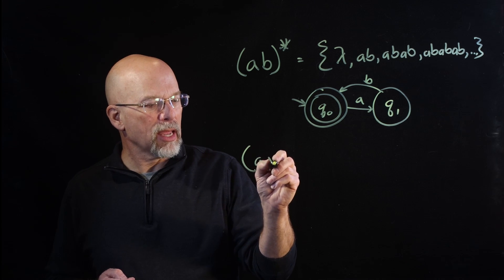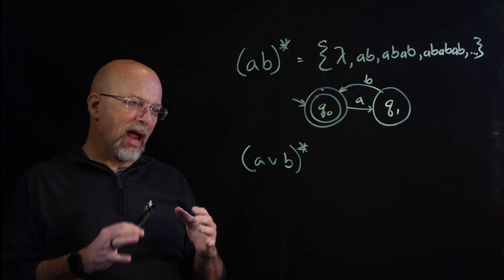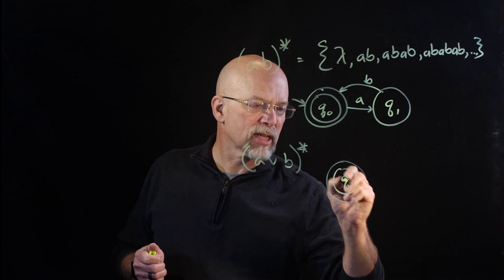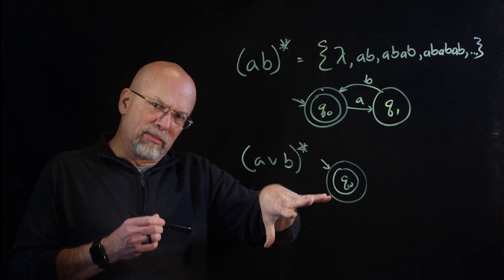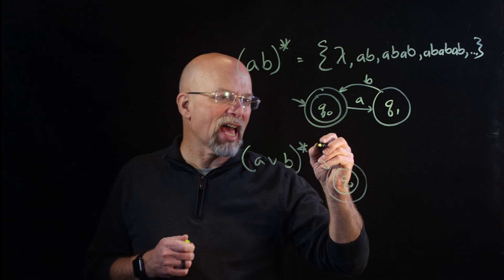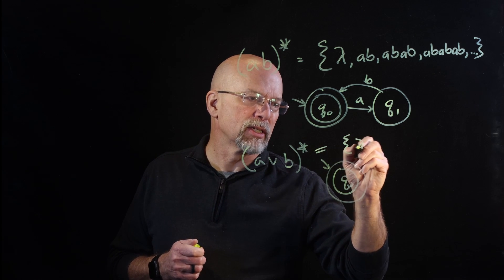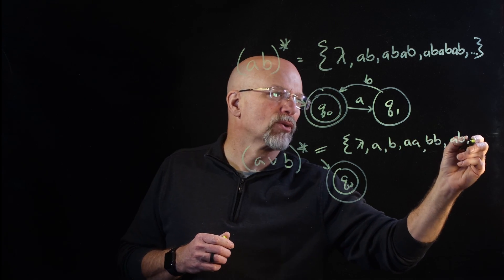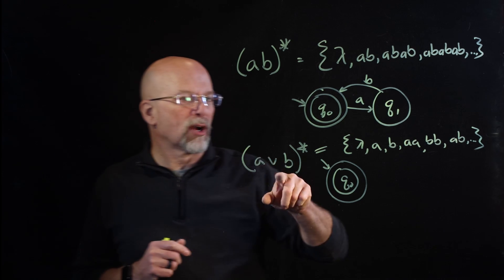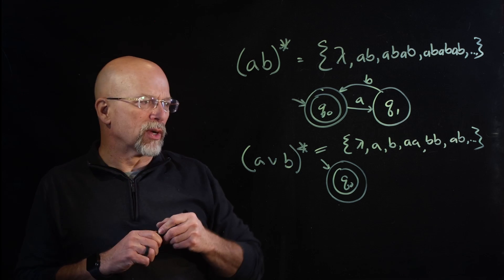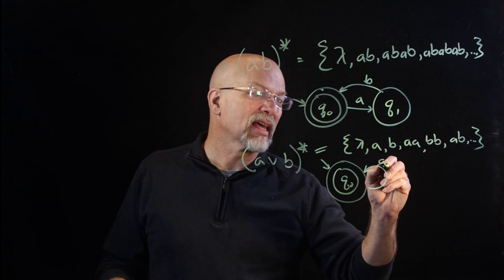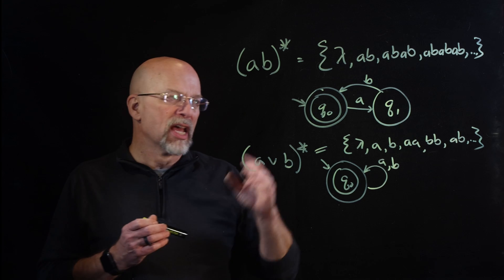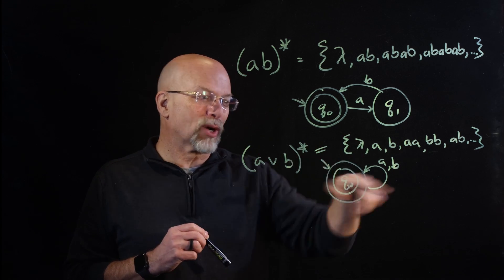What about (A or B)*? Since it's a star, the initial state is also the final state for the empty string. The set generated includes the empty string, A, B, AA, BB, AB — basically any sequence of A's and B's. If we get an A, we come back to the final state; if we get a B, we also come back. Using a single loop transition labeled 'A, B' (separated by a comma) captures both transitions back to the final state.